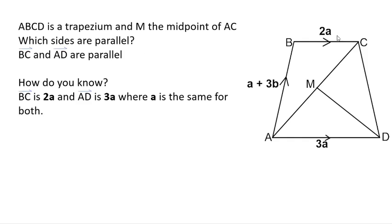Okay, so you should have noticed that BC and AD are parallel. If you look at BC, it is two lots of a, and AD is three lots of a. Well, a is just the same vector, so what we've got here is that BC is two lots of this vector a, which would go in the same direction as the vector 3a. However, 3a would be bigger.